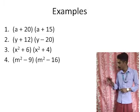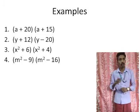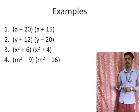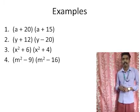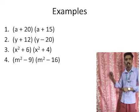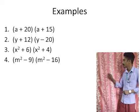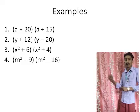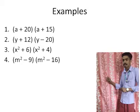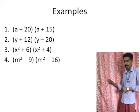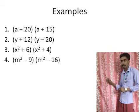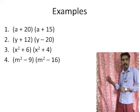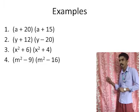Let's do some examples to understand how to use these identities. The first one is (a+20)(a+15). The second one is (y+12)(y-20). The third one is (x²+6)(x²+4). The last one is (m²-9)(m²-16).